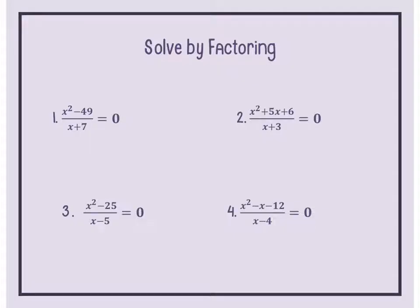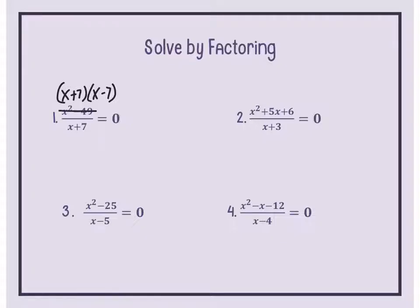We start by solving by factoring. For number one, we look at our numerator — is it factorable? I see two terms with a minus sign. Can I take the square root of both of them? If yes, this is a difference of squares. A difference of squares factors to the square root of each term, with one plus sign and one minus sign.